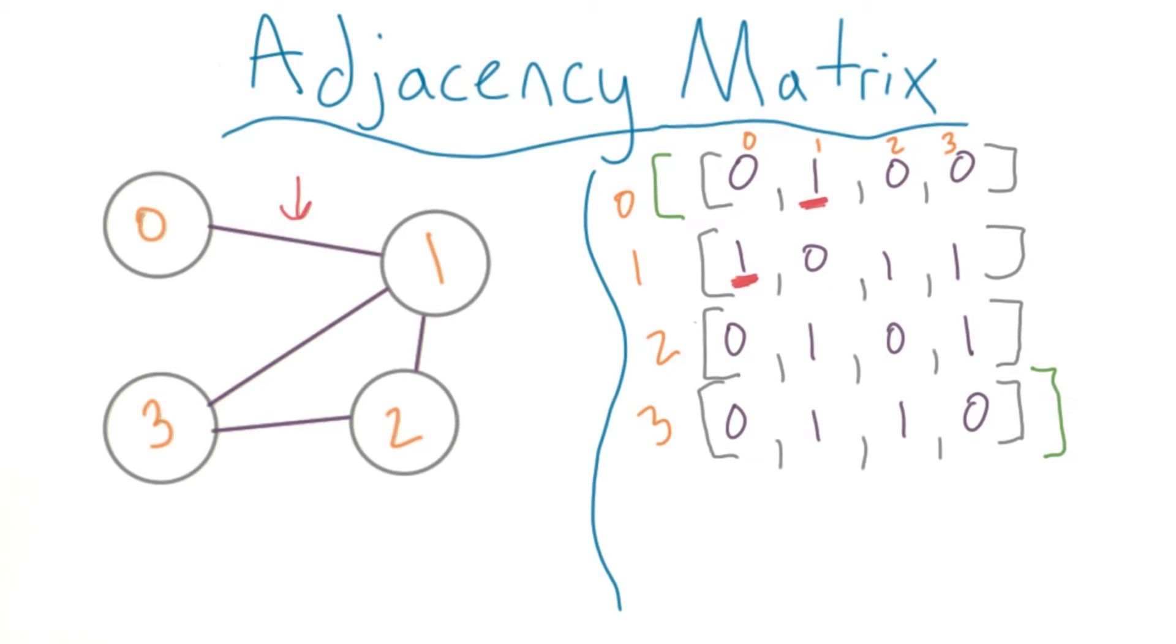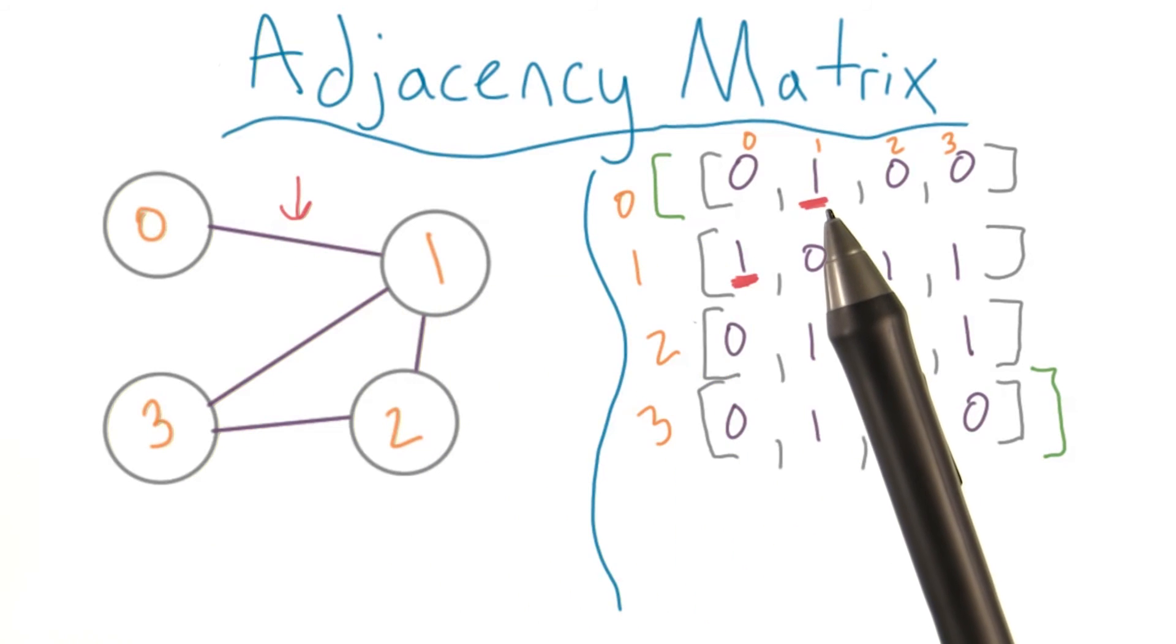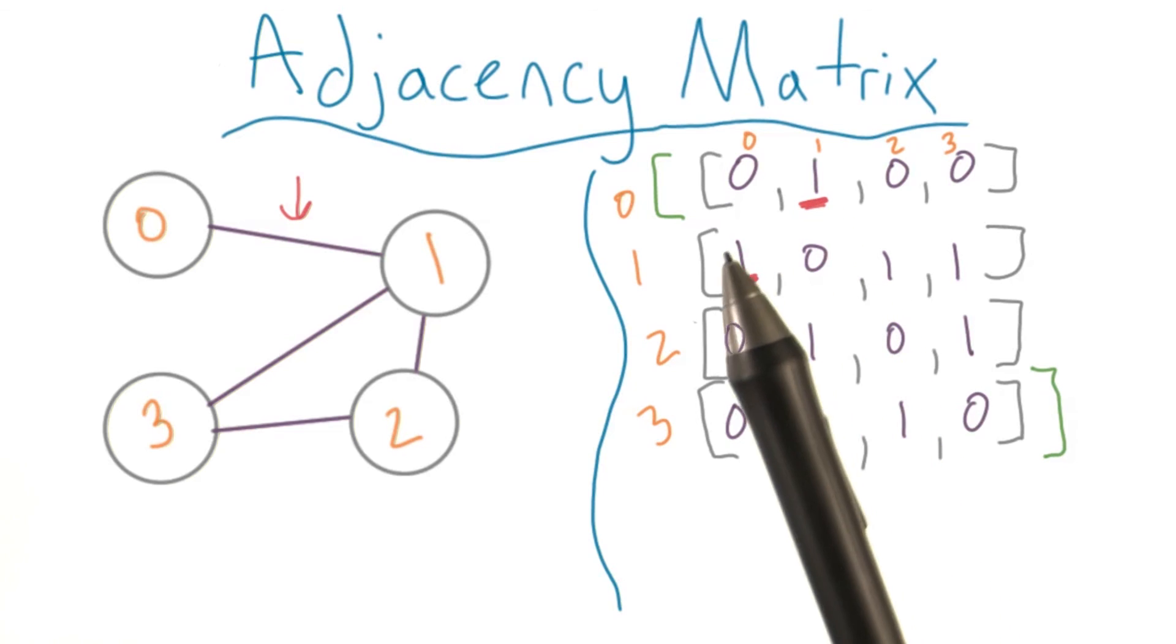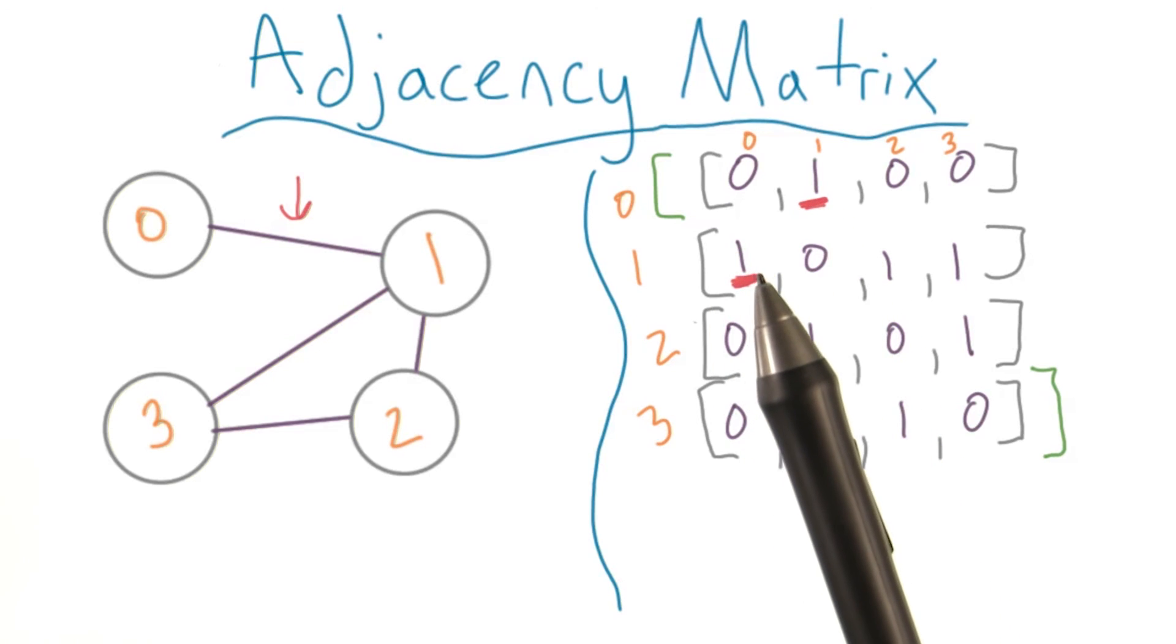You should also note that a single edge shows up twice in the matrix. For example, this edge shows up when the row is 0 and the column is 1, and also when the row is 1 and the column is 0.